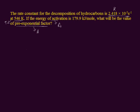Let us apply the Arrhenius equation, which relates the pre-exponential factor A and the energy of activation. The equation is: log k = log A − Ea / (2.303 × R × T), where k is the rate constant, A is the pre-exponential factor, Ea is the energy of activation, R is the gas constant equal to 8.314 J per mol·K, and T is the temperature. All values except A are known.